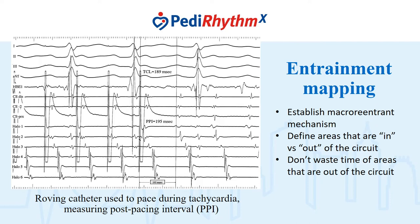Entrainment mapping: if you ask me how I figured out what was going on with a typical intra-atrial reentry tachycardia patient before we had electroanatomic mapping, it was entirely about entrainment mapping. Basically, you put the patient into tachycardia and use a roving catheter to pace into tachycardia, usually 10 or 20 milliseconds shorter than the tachycardia cycle length. You use that as a probe to determine whether any particular site is in or out of the circuit. The logic is that if you capture the circuit from a location that's in it, when you come off pacing, it will take exactly the tachycardia cycle length to get back to that location. It's not useful unless you have a macro reentry tachycardia, so the first step is to establish that diagnosis.